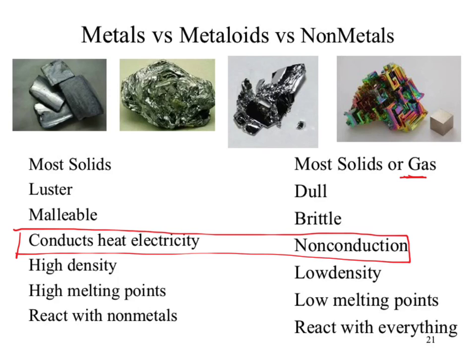Copper is a metal. What color is copper? It's kind of an orange, reddish brown — that's not silver. So the color doesn't necessarily mean it's a metal. Another example: gold is a metal, and it's not silver or gray. So the color can be misleading — notice we don't actually say colors within this list of properties.